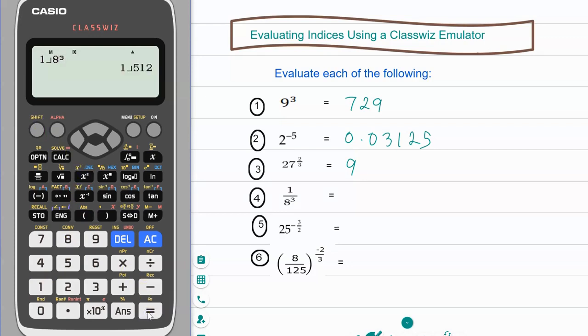For number five, let's clear the screen first. So you have 25, 25 raised to the negative three halves, so power and negative 3 fraction, because it's a fraction, fraction button, 2, and then click on equals.